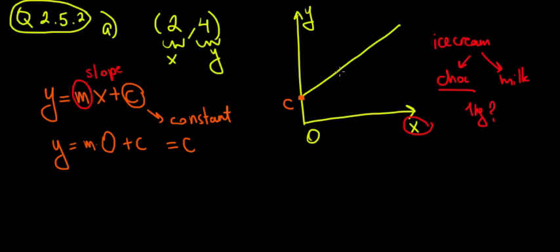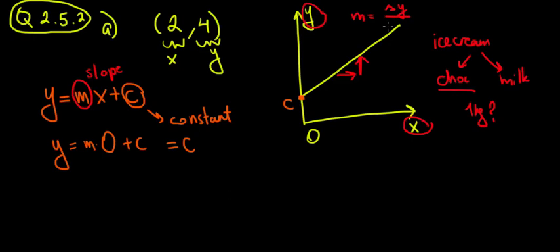Is it worth buying one more kilogram of chocolate to produce more ice cream? It would be worth it if it increases our profit. The linear function shows: if x increases by one unit, how does ice cream production change? That's what the slope tells us. The slope is the change in y divided by the change in x.